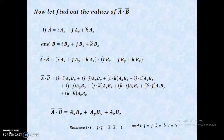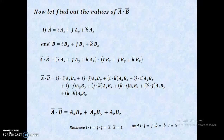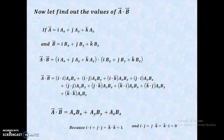Because i·i = j·j = k·k = 1, and i·j = j·k = k·i = 0, therefore A-vector dot B-vector equals Ax·Bx + Ay·By + Az·Bz.